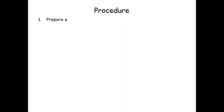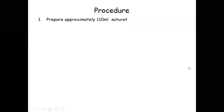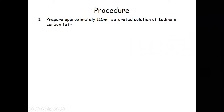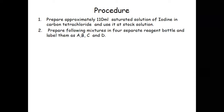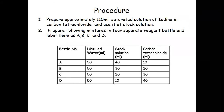Now we will see the actual procedure of the experiment. Prepare approximately 110 ml saturated solution of iodine in carbon tetrachloride and use it as a stock solution. Then prepare the following mixtures for four reagent bottles and label them as A, B, C, and D.